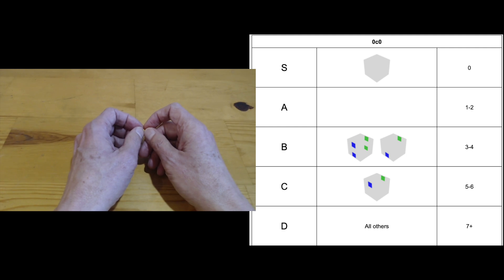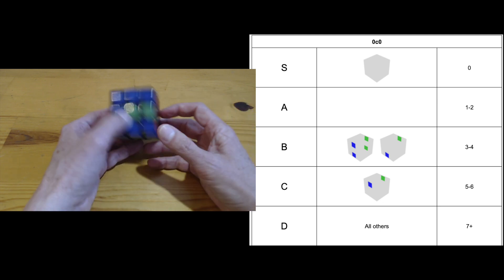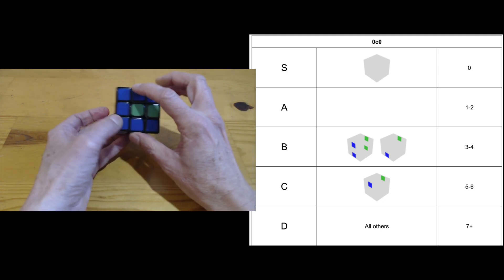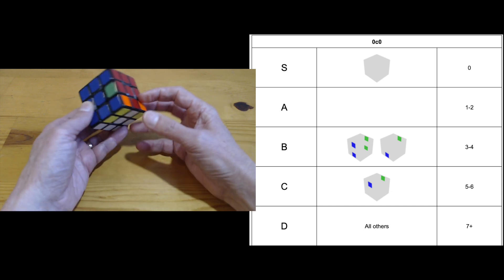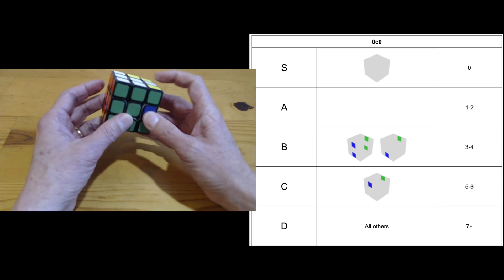The other good edge cases for 0C0 are easier to recognize because they have all the bad edges concentrated in one slice. So here's one with four bad. These are bad. And these are bad. That's solvable with U2 M2 U2. S2 slice in the middle also works.